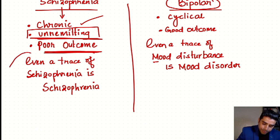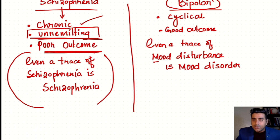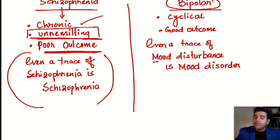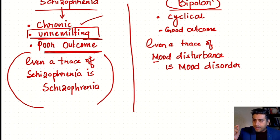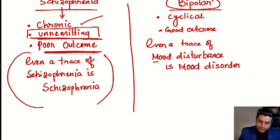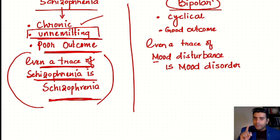This is a very important concept. Whenever we ask the attendant about the patient, many people say the patient is all good after treatment. But in Schizophrenia, a patient is usually not completely well — a trace of the event remains. The key statement is: even a trace of Schizophrenia is Schizophrenia. This is the core concept of Schizophrenia.